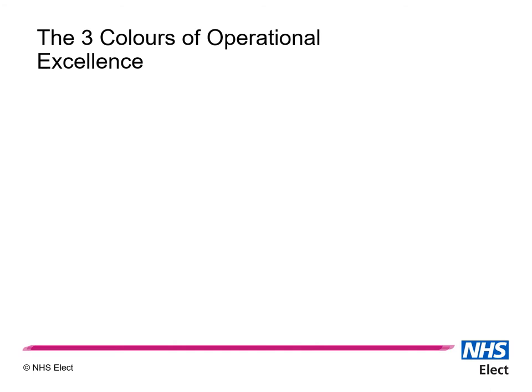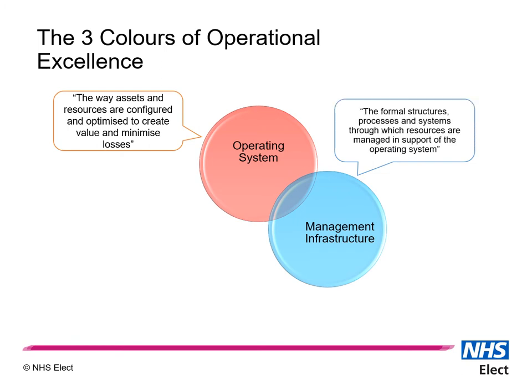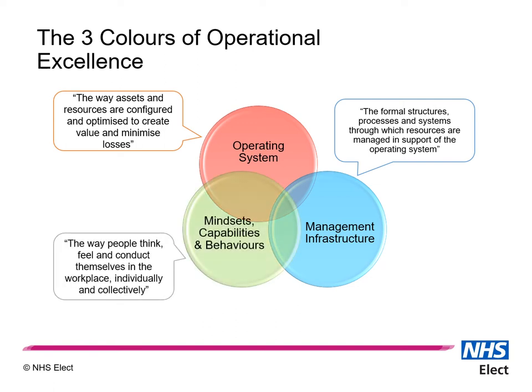McKinsey — here at NHS Select, we like to pinch with pride. McKinsey came up with the three colours of operational excellence. We have operating systems in red that look at your assets and resources. We have management infrastructure in blue — these are your processes, structures and systems. And then in green, we have mindsets, capabilities and behaviours — these are your hearts and minds, the way people feel and how they act in the workplace, both as an individual and as a group of people.